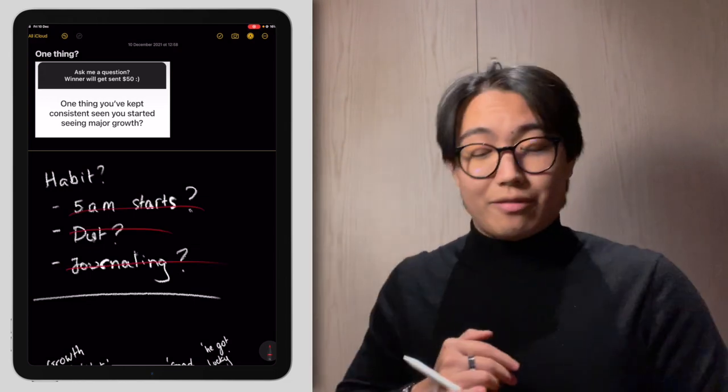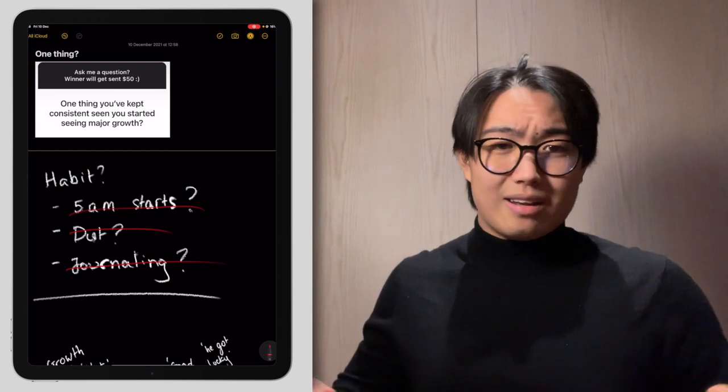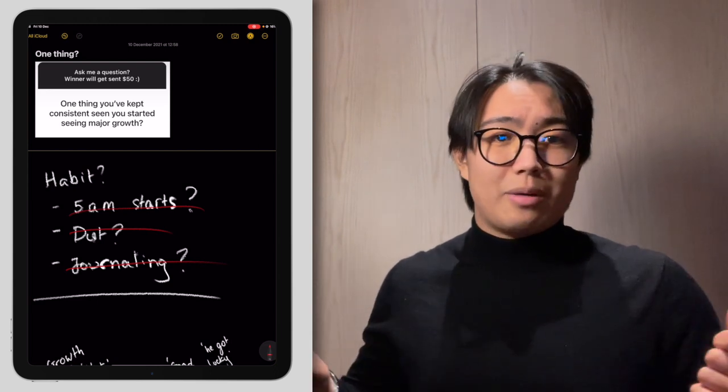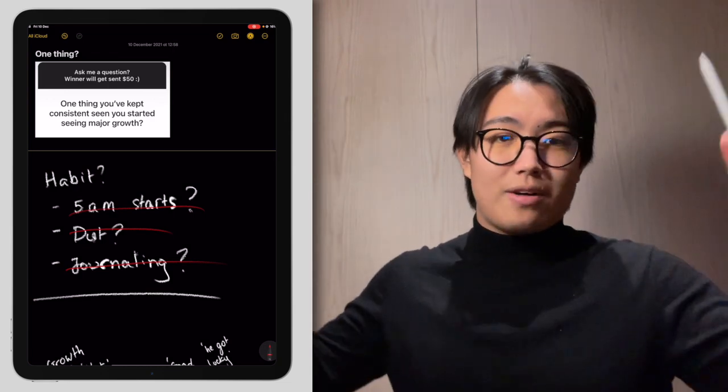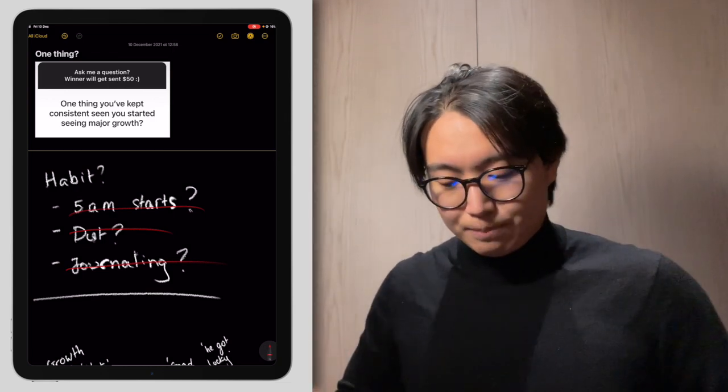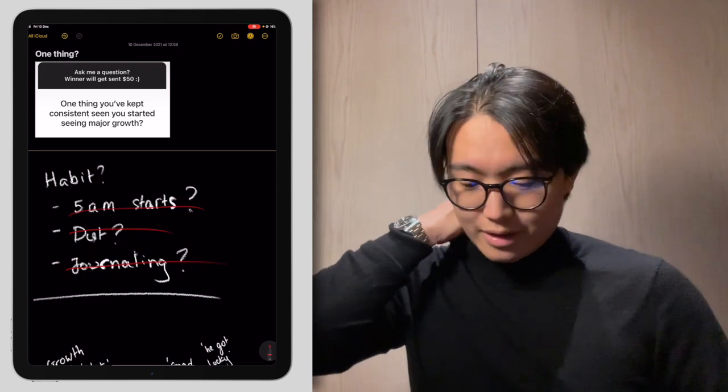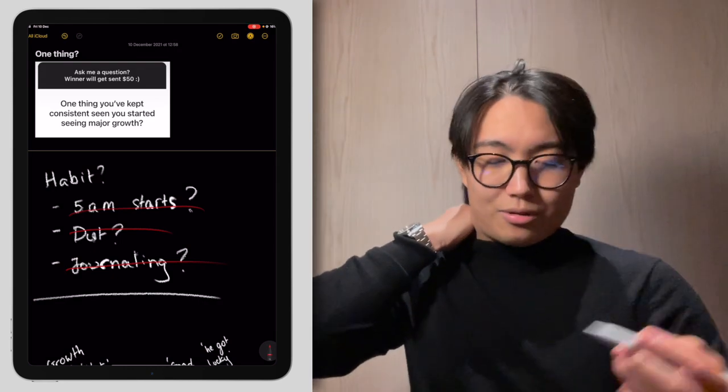For example, waking up at 5am I stopped doing that at like 17 because I realized it doesn't fit my chronotype. Waking up at 5am my brain is completely fucked and I can't do any work because I can't go to bed early enough. Not can't, choose not to.